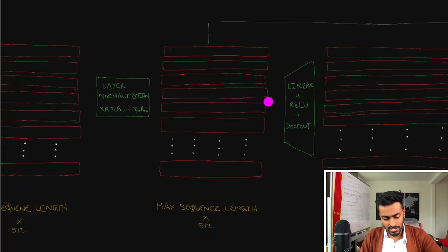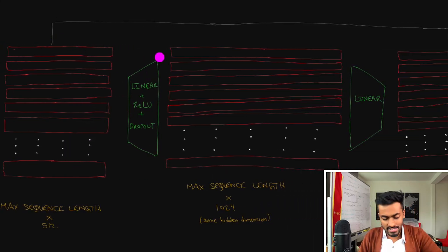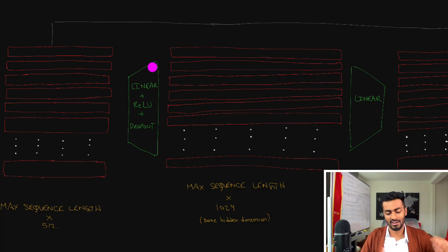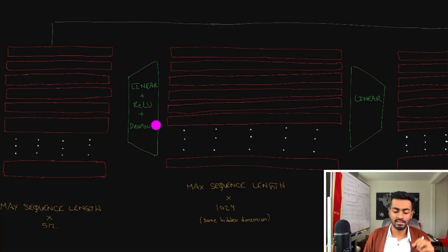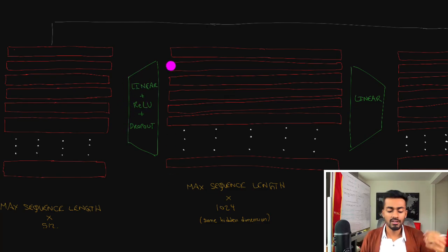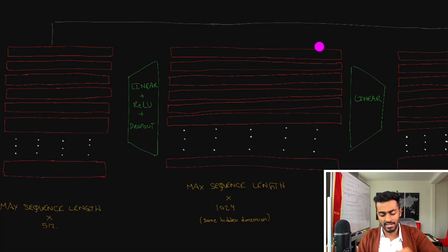We now pass the normalized output into a feed-forward block: a linear layer with activation and dropout. The linear layer promotes interactions among the eight heads that were simply concatenated earlier, helping them interact across layers. ReLU is the activation function, helping the network learn more complex patterns. Dropout randomly turns off neurons in the feed-forward layer so the network generalizes better and doesn't memorize specific patterns. For example, if the linear layer maps 512 to 1024 neurons, each word is now represented by a 1024-dimensional vector.